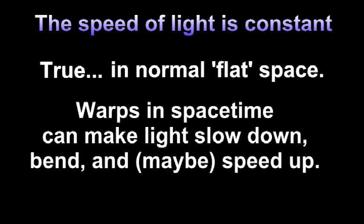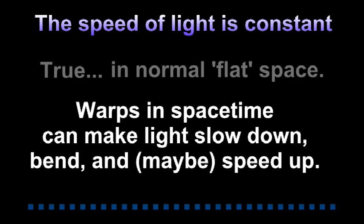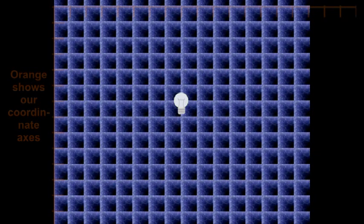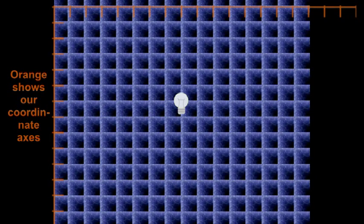But warps in spacetime can make light slow down, bend, or maybe go faster. Let's see some examples of what that looks like. Here we have a square blue grid representing flat space and some orange coordinate axes by which we'll measure the speed of light.